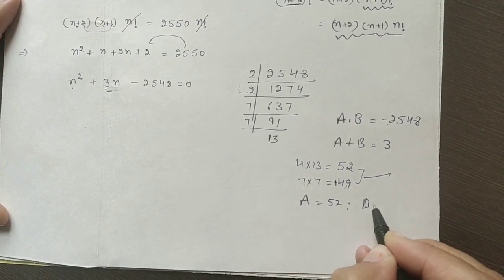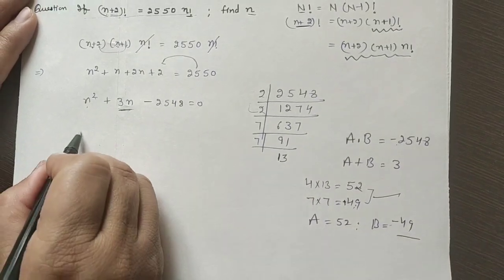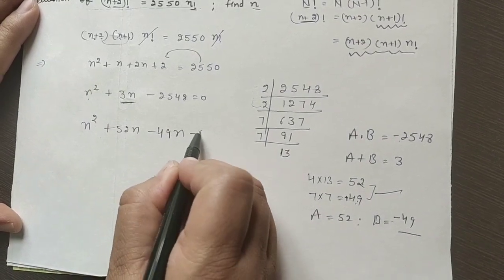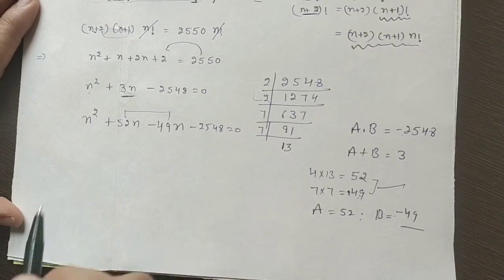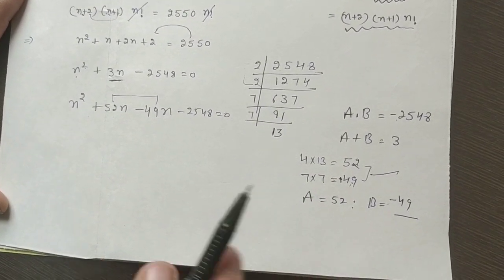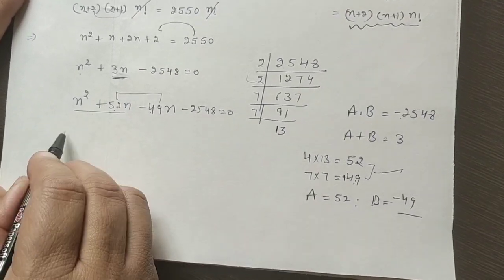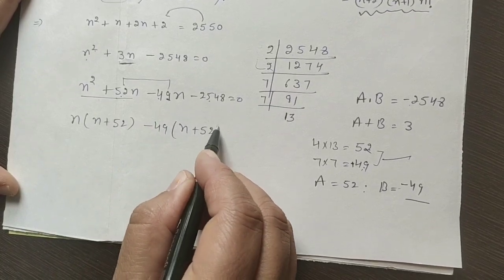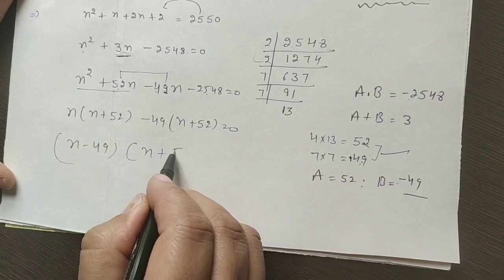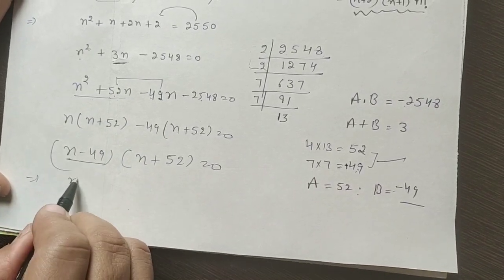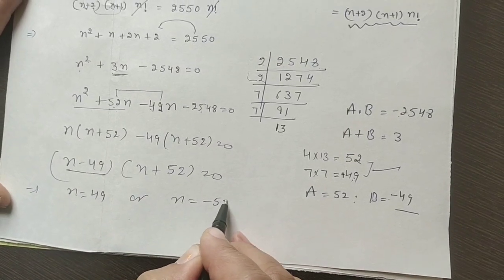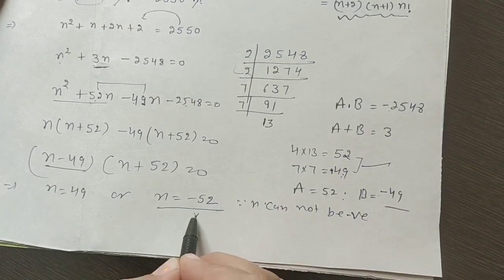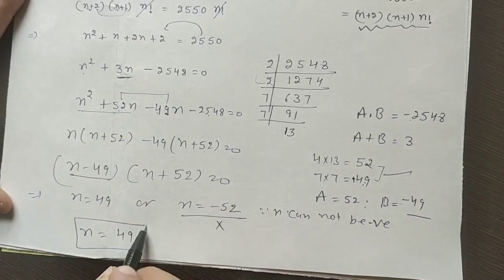We split the middle term using a equals 52 and b equals minus 49, since their product is minus 2548 and sum is 3. This gives n plus 52 into n minus 49 equals 0. So n equals 49 or n equals minus 52. Since n cannot be negative, we discard minus 52. Therefore n equals 49 satisfies the relation.